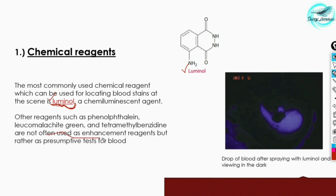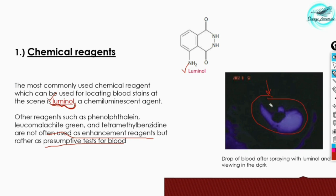Other reagents such as phenolphthalein, leucomalachite green, and tetramethylbenzidine are not often used as chemical enhancement reagents — rather, they are used as presumptive tests for blood. The chemiluminescence produced by luminol will be understood in more detail in the next slides.